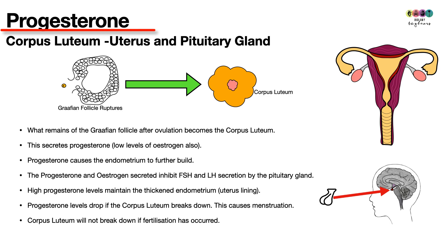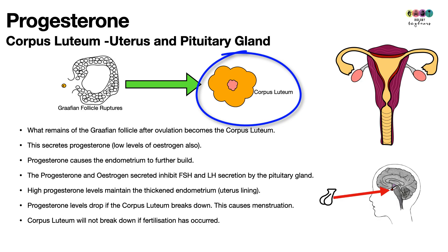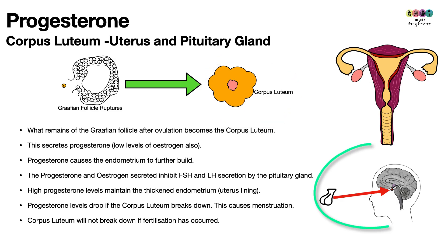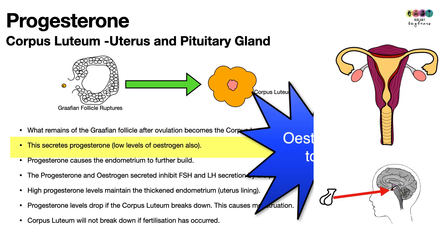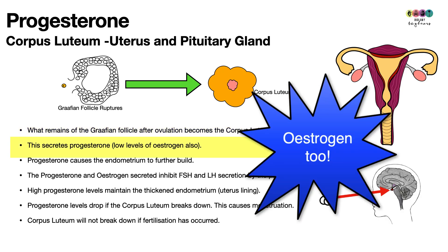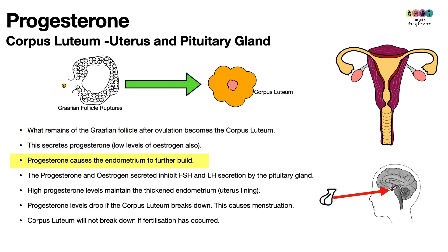Next is progesterone — the P in FOLP — secreted by the corpus luteum in the ovary. What remains of the Graafian follicle after ovulation becomes the corpus luteum, which secretes progesterone and also low levels of estrogen. Progesterone causes the endometrium — the lining of the uterus — to build up further.